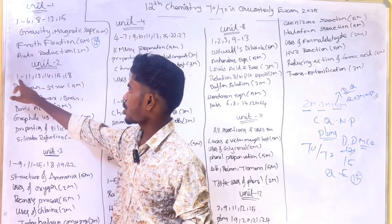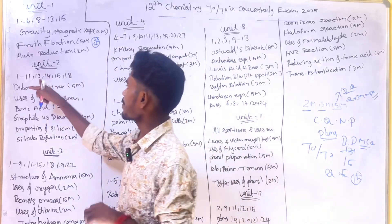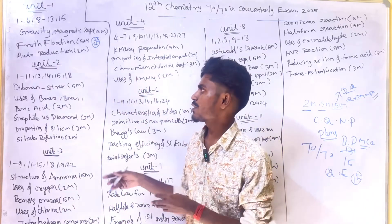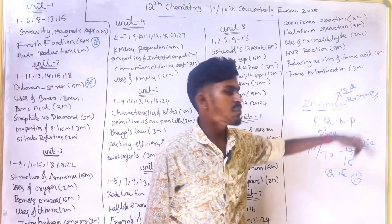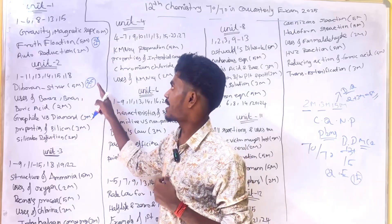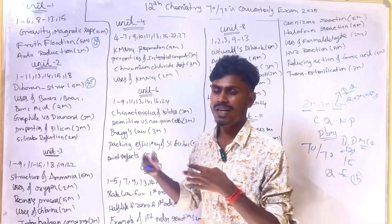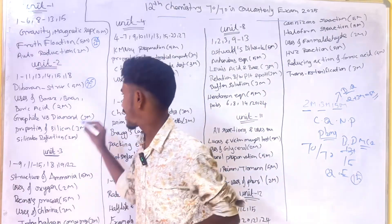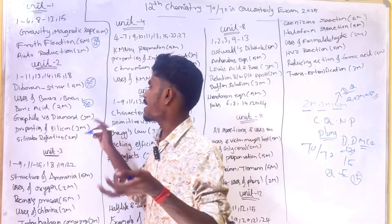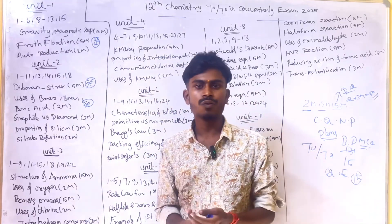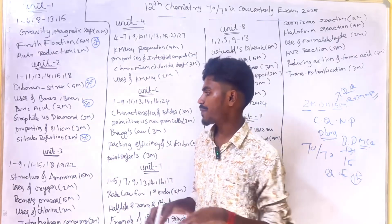Unit 2: Book back questions 1, 2, 3, 4, 5, 6, 7, 8, 9, 10, 11, 13, 14, 15, and 18 are important. Diborane structure is a direct 5 mark question — very important. Borax, Boron, and Boric acid uses are 2 mark questions. Graphite versus Diamond differentiation is a very important 3 mark question. Properties of Silicon and Silicate definition are also very important.